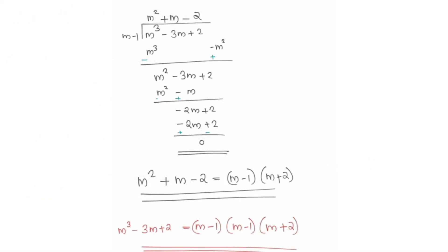We have m³ - 3m + 2. We divide by (m - 1) using long division step by step. This gives (m - 1) into (m - 1)(m + 2), so m³ - 3m + 2 equals (m-1)²(m+2) equals 0. The three roots are m = 1, 1, and -2.